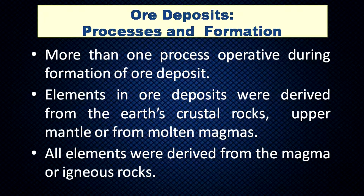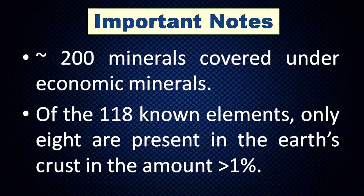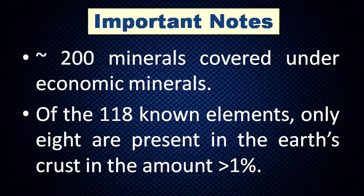All elements were derived from magma or igneous rocks. Magma contains almost all elements present in the periodic table. About 200 minerals are covered under economic minerals across the world. Of the 118 known elements in the periodic table, only 8 elements are present in the earth's crust in amounts greater than 1 percent. The rest of the elements are less than 1 percent.